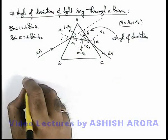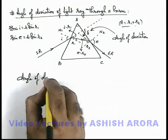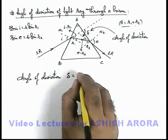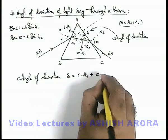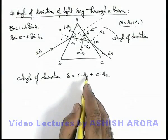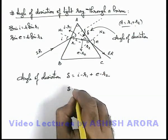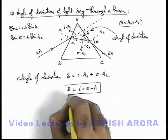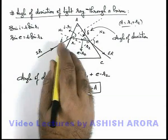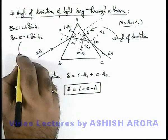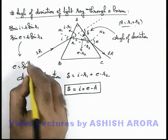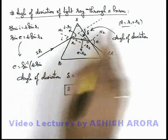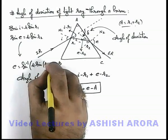So we can directly write the angle of deviation delta as the sum of these two interior angles: delta equals (i minus r1) plus (e minus r2). Since r1 plus r2 equals the prism angle A, the deviation angle simplifies to delta equals i plus e minus A. We can also substitute the value of e in terms of i using Snell's law relations: e equals sine inverse of mu sine r2, and r2 can be written as A minus r1, giving r2 as A minus r1.